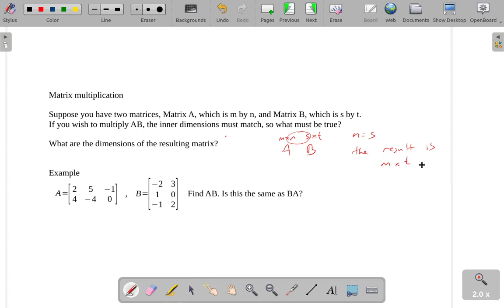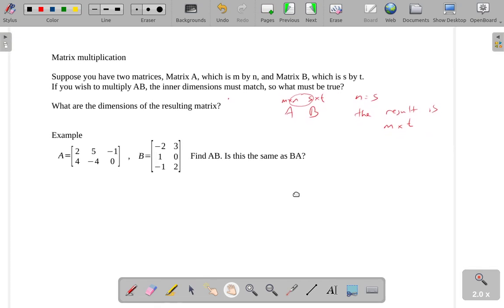So already you can see there's something weird happening here. We're talking about the number of columns of the first matrix has to match the number of rows of the second matrix. And the resulting matrix has the number of rows of this one and the number of columns of that one. It's a little bit of a weird process.